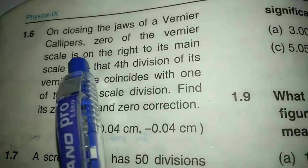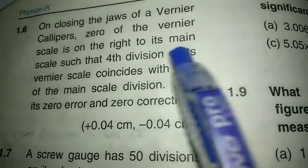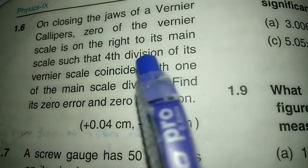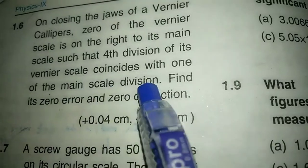On closing the jaws of a vernier caliper, zero of the vernier scale is on the right to its main scale such that the 4th division of its vernier scale coincides with one of the main scale divisions.